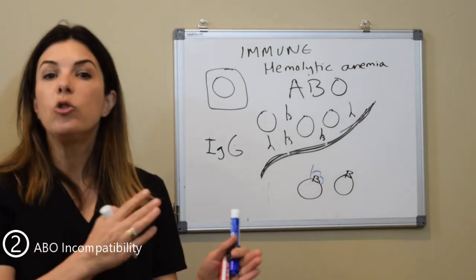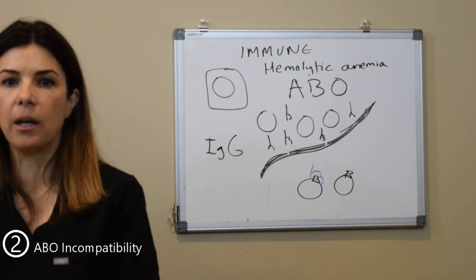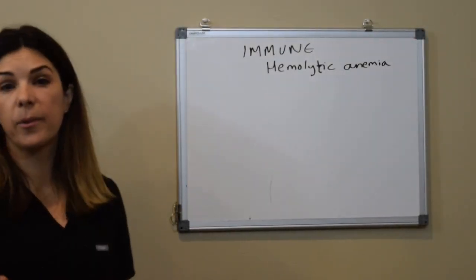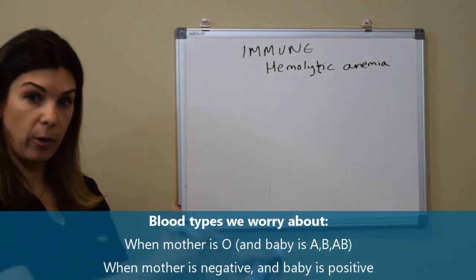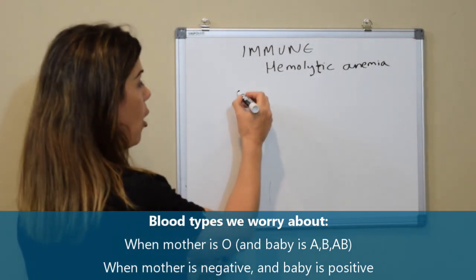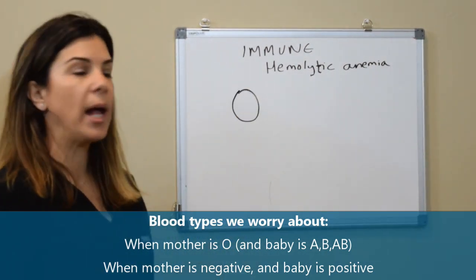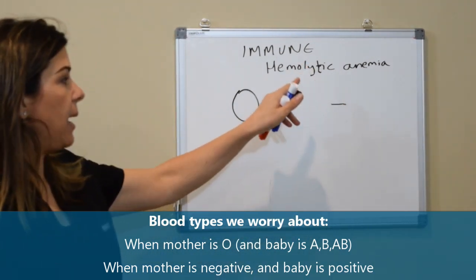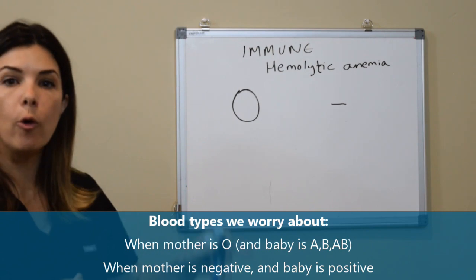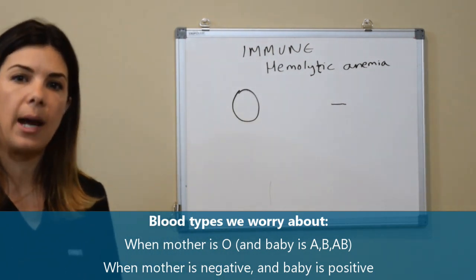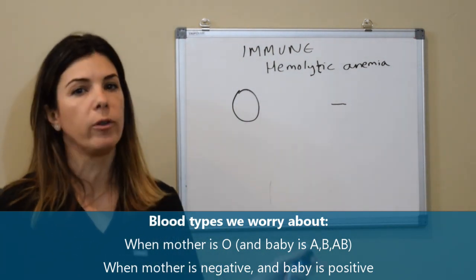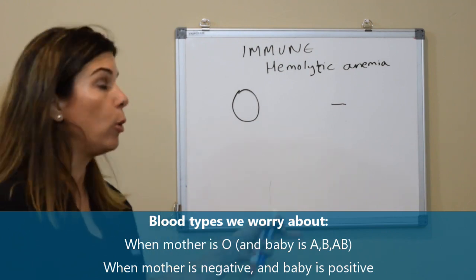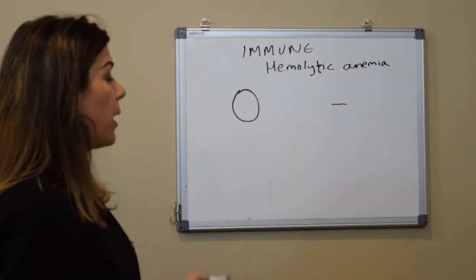So we worry about ABO incompatibility specifically when the mommy is O. When the mommy is B, A, or AB, the antibodies she has made do not cross the placenta, so we do not have to worry about hemolysis. The blood types we would worry about most in the mother are the O blood type as well as any negative blood type — whether A negative, AB negative, B negative, or O negative. If you see those in the mother along with a high bilirubin level, you start thinking: am I missing an immune hemolytic process?